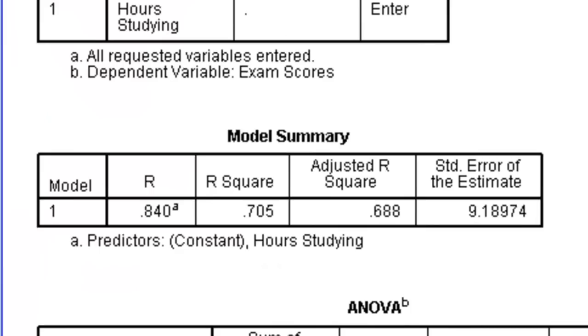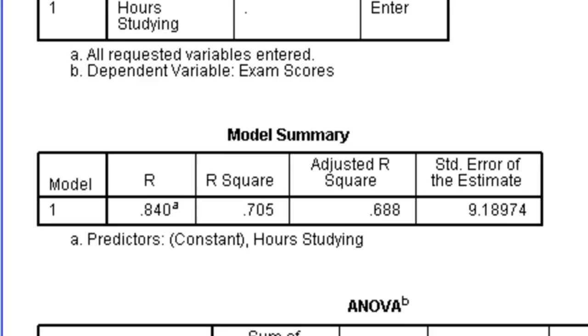For the results of the regression, the first important table is the model summary. This is where we find R, which is our effect size, and R squared, the proportion of variance in exam scores that can be predicted from hours spent studying. Notice that R here and the R from the correlation are the same. Regression effect size will always equal the correlation coefficient when there are only two variables.